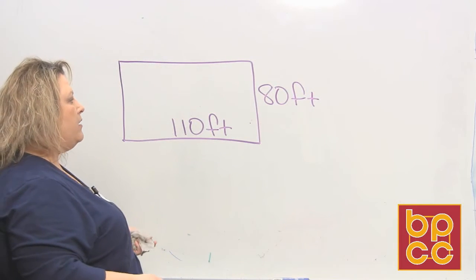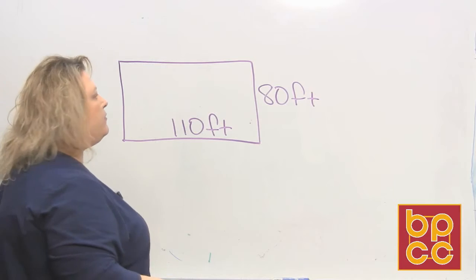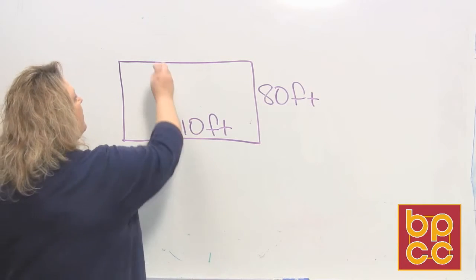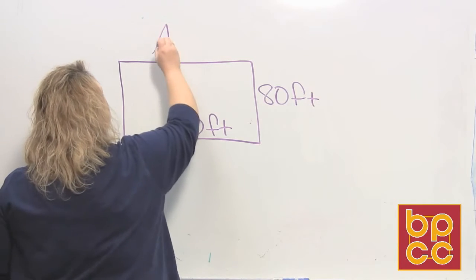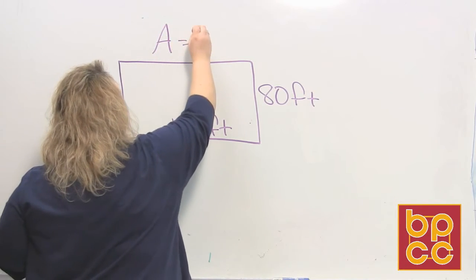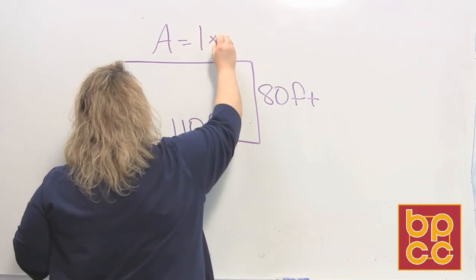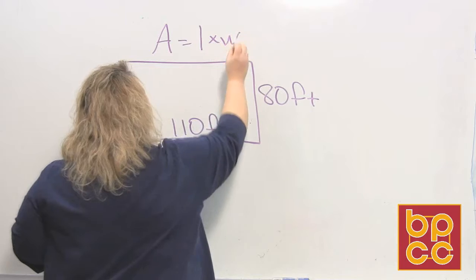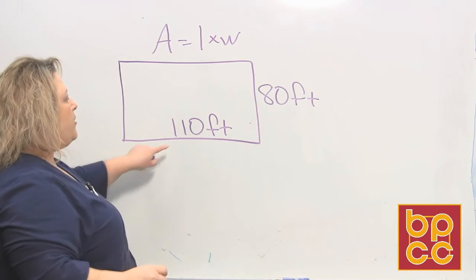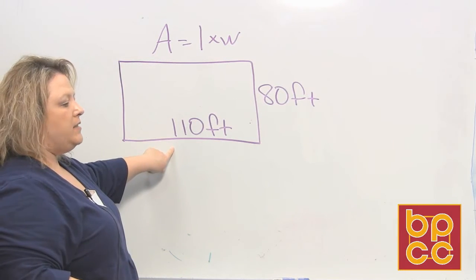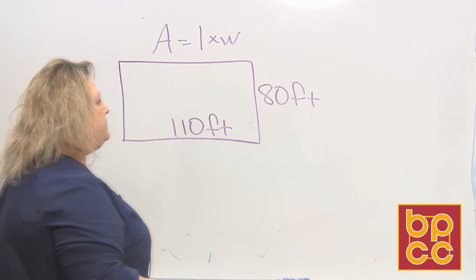We just said that area is length times width, so all we have to do is multiply 110 times 80.